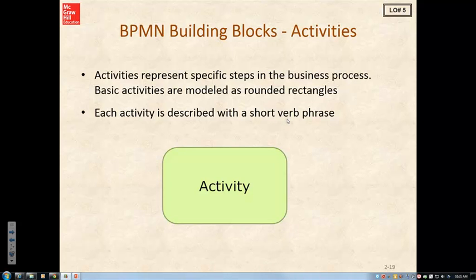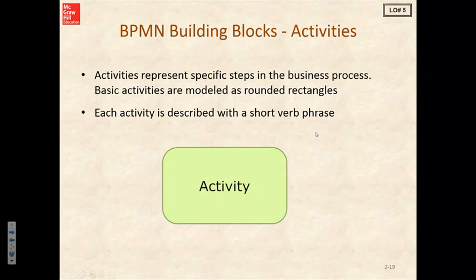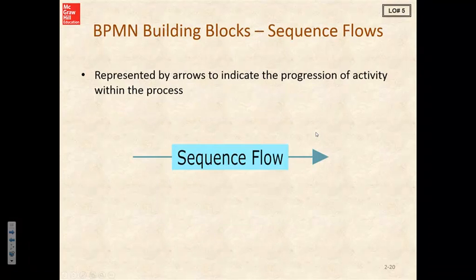So we've got our start and we've got our activities. It would be nice for our reader if there was some indication of where we're going. That's why we have sequence flow arrows — these arrows represent the progression of activity within a process, and we will want to include these in our diagrams as we build them.